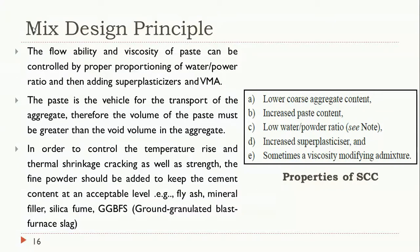To control temperature and thermal shrinkage cracking, mineral admixtures such as fly ash or GGBS should be added, as they lower the heat of hydration and thereby reduce thermal and shrinkage cracks. These properties are given in IS 10262:2019. SCC should have lower aggregate content compared to normal concrete, increased cement paste content, and lower water-to-powder ratio.